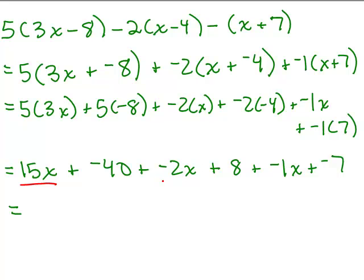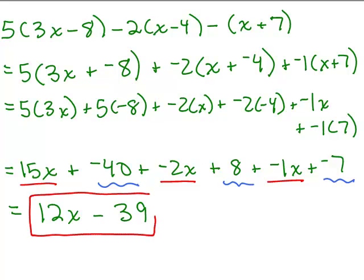Instead of writing those all out again, if I put the like terms that have the x part together, that will give me again 15 minus 2 is 13, minus 1, will give me 12x. And then combining the constants: negative 40 plus 8 can be thought of as negative 32, minus 7 is going to be negative 39. So you do get the same answer. It takes a little bit more writing, but if it's easier for you, this is just an alternate way to do the same problem. I'm going to do the rest using the other method where we don't change all subtraction to adding the opposite — it just gets kind of long and complicated for most people doing it this way. But if it's easier, do it.